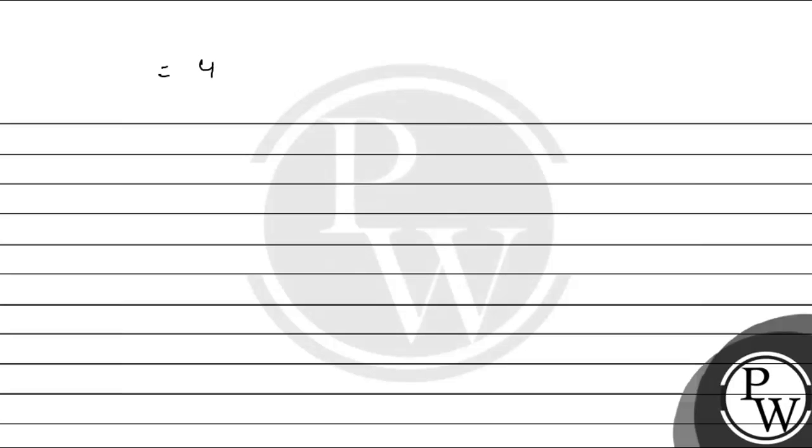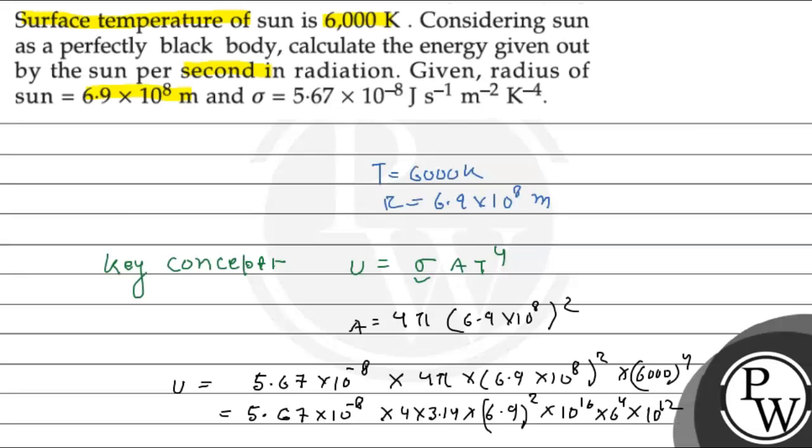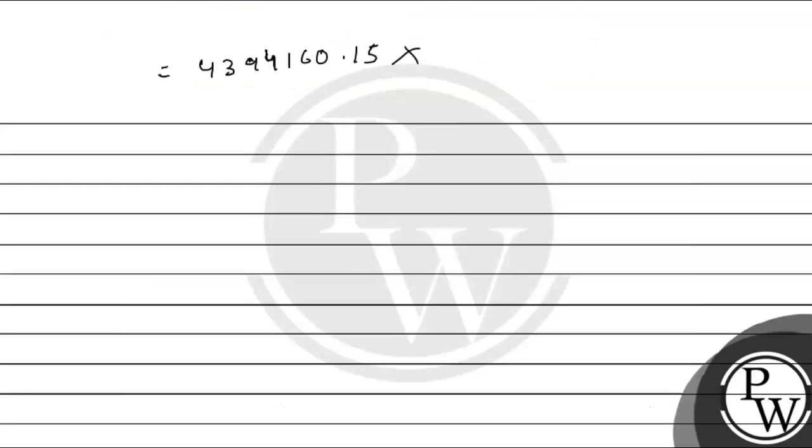This gives the result as 4394160.15 into 10 to the power, minus 8 plus 16 plus 12, which is 4394160.15 into 10 to the power 20 joule per second.